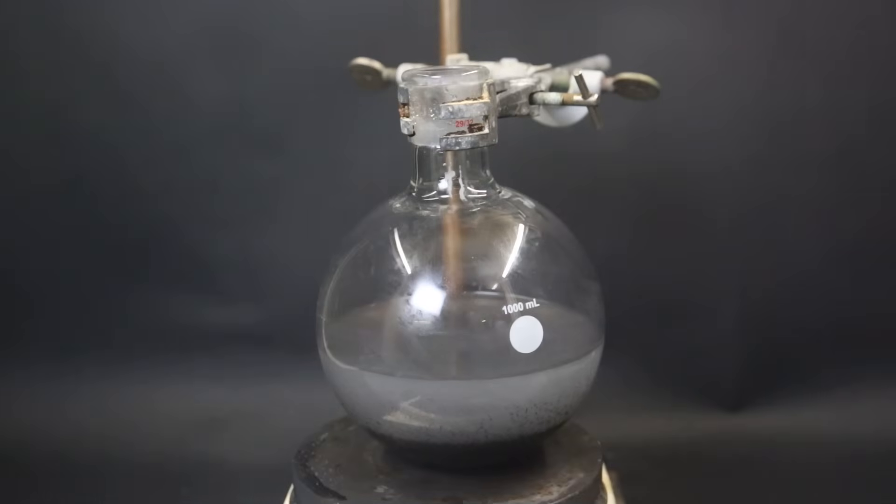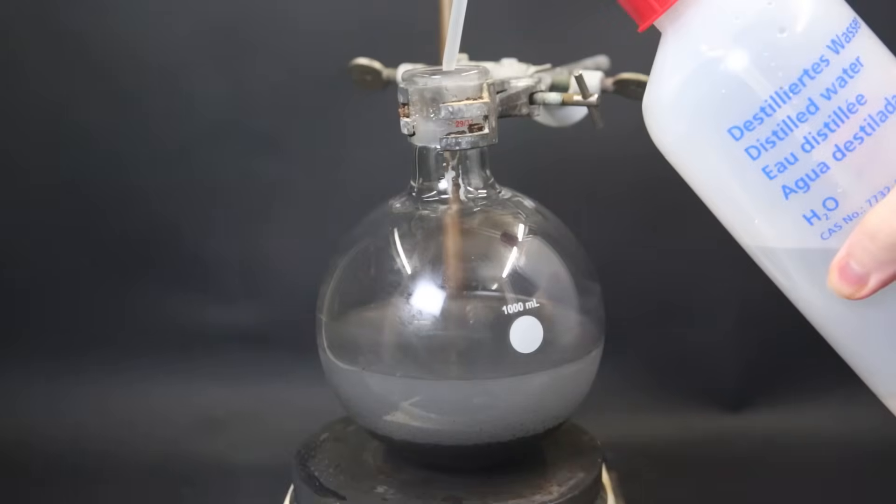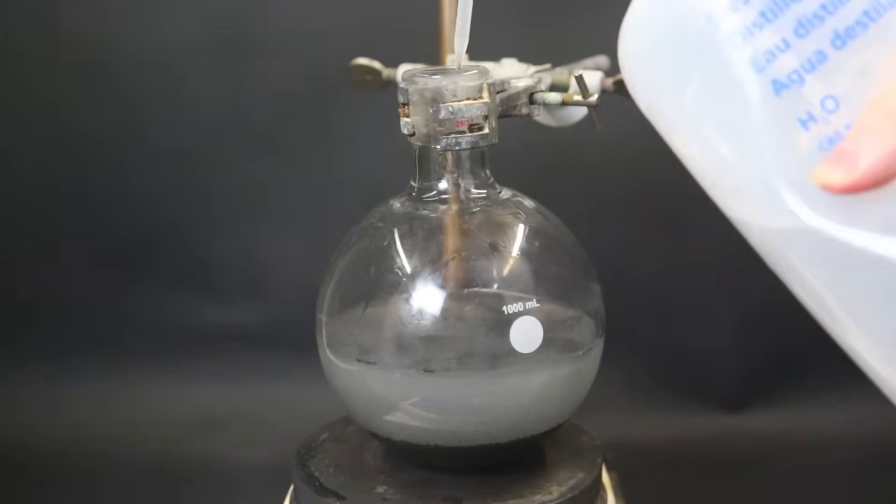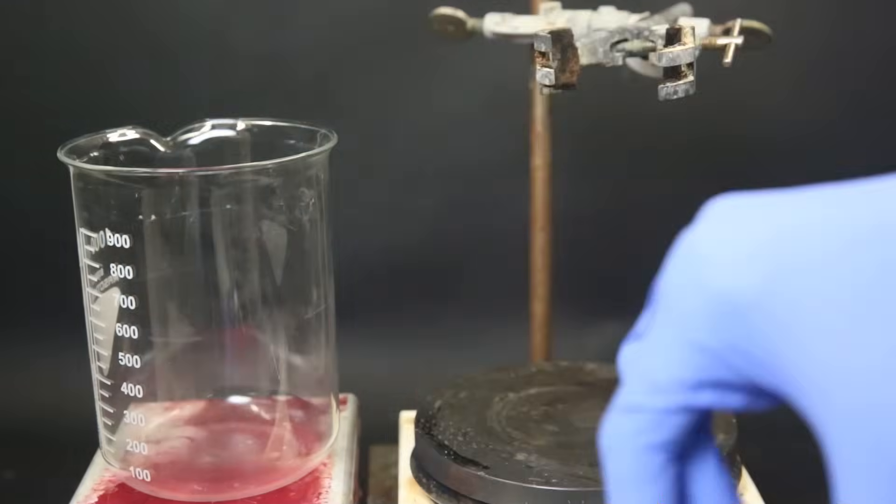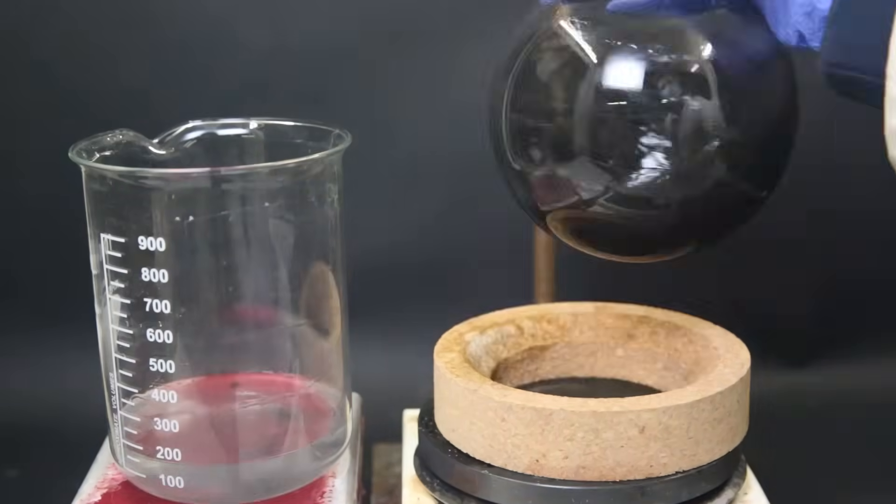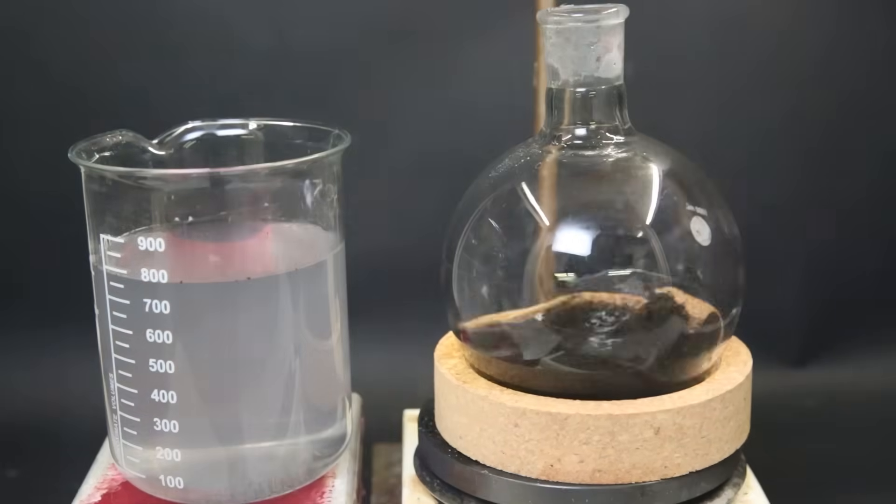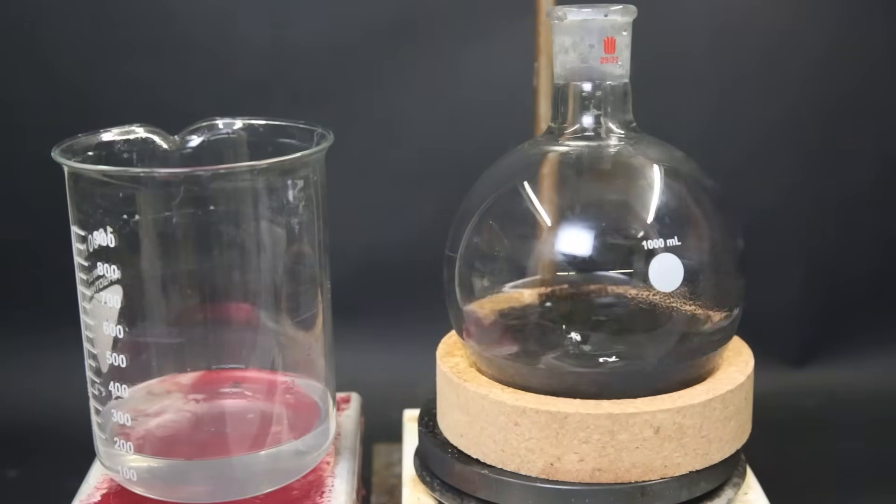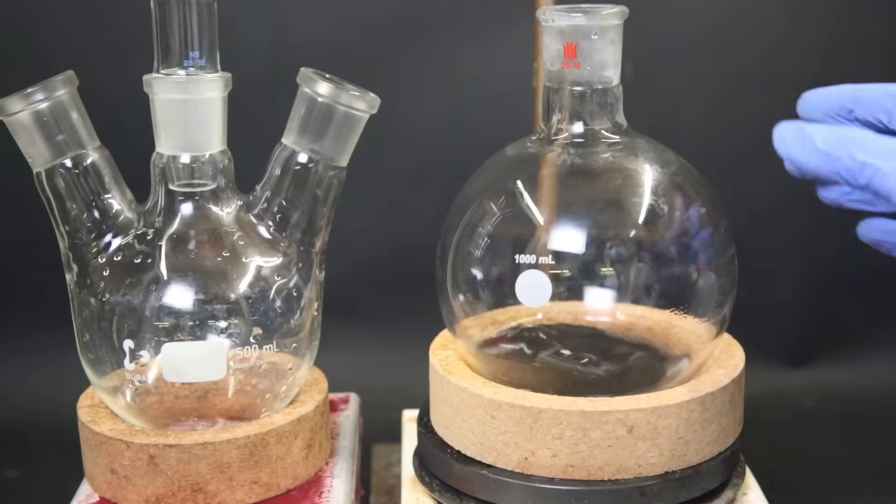When that is done, I stop stirring and use some distilled water to remove any nickel that is sticking to the sides of the flask. Now to remove all of the sodium aluminate and sodium hydroxide, I wash the catalyst 10 times through decantation with 10 portions of 150 ml of distilled water. When that is done, I am left with a black slurry of nickel powder.